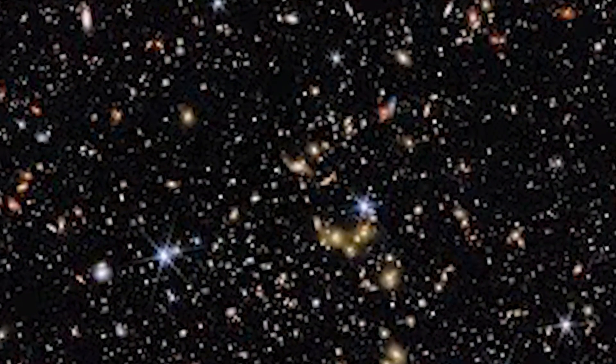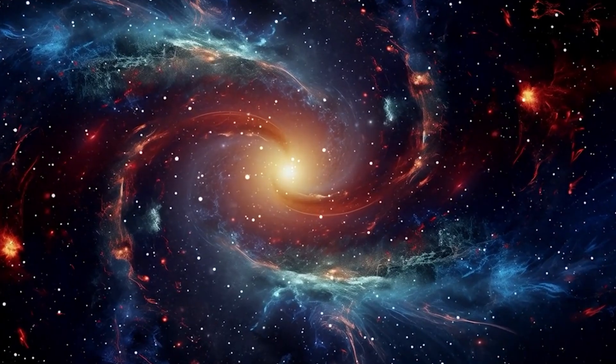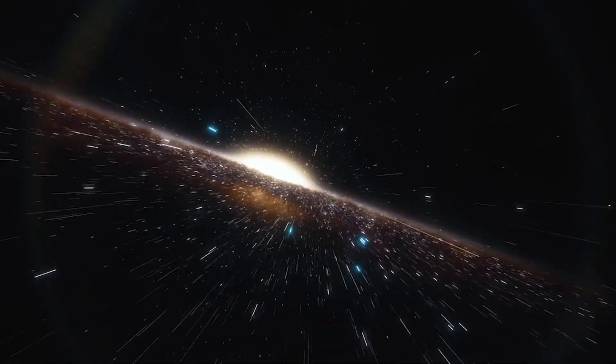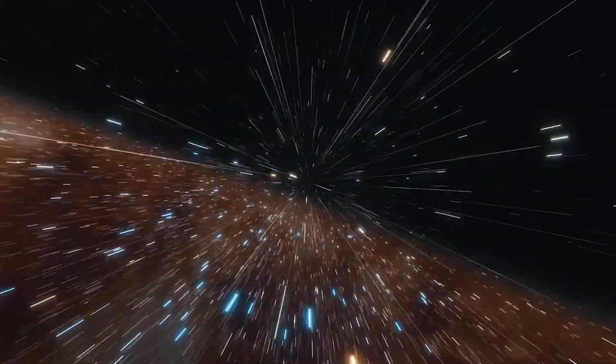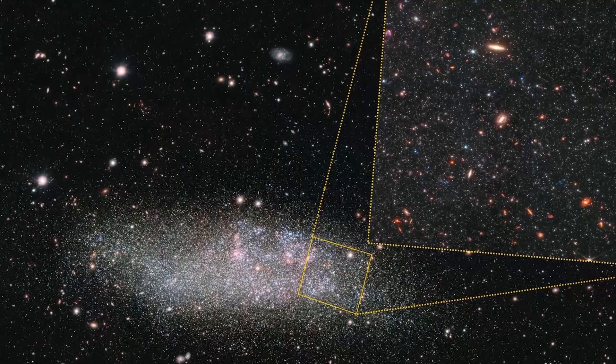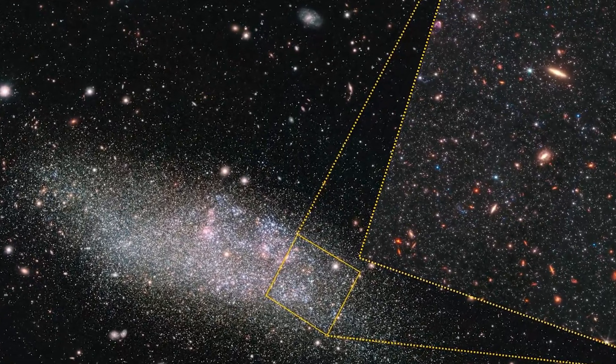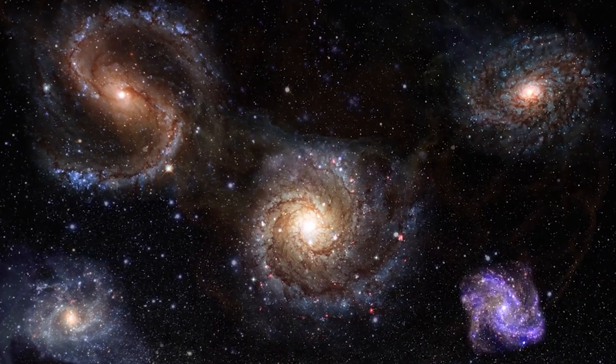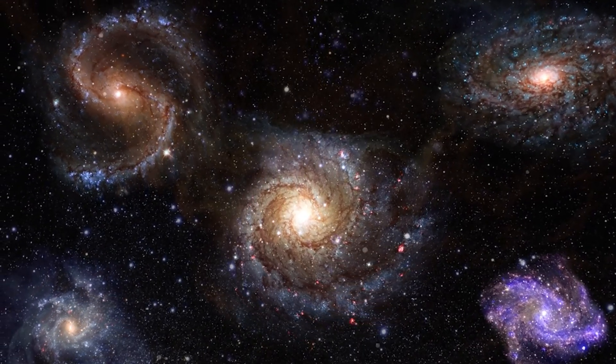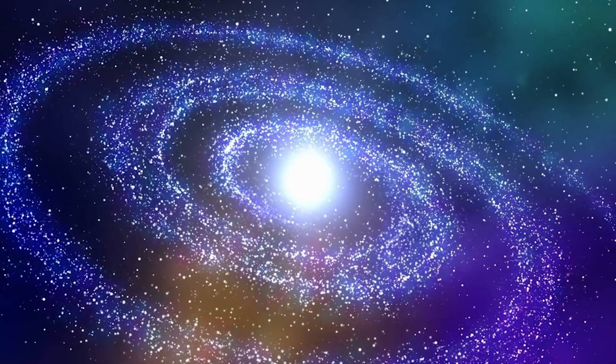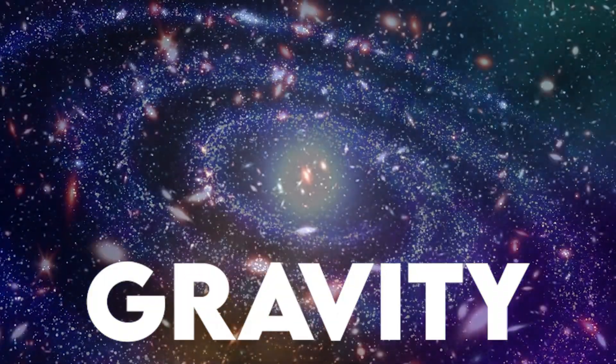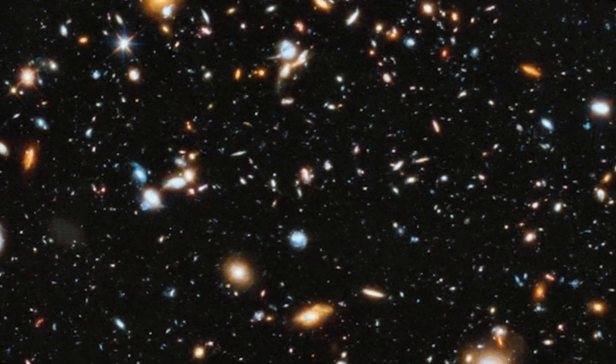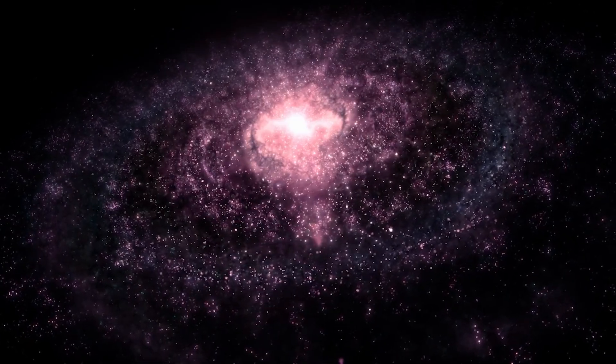We're not just staring at a pretty picture here. We're peering straight through time. The light from the nearest galaxies in this image has been on a multi-billion year road trip just to reach us, while the glow from the most distant ones has been traveling since the universe was practically in nappies. Our first stop lands us in the local cosmos, a mere few billion light years away, practically next door by universal standards. Here, galaxies appear in their fully grown glory: elegant spirals, colossal ellipticals, and quirky irregulars all swirling and tangoing under the influence of gravity. Thanks to the sheer scale of the Cosmos Web field, we can watch how these galaxies organize themselves into gigantic cosmic neighborhoods and superstructures.